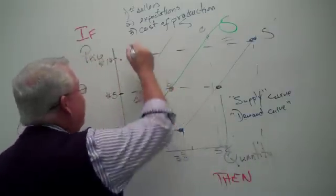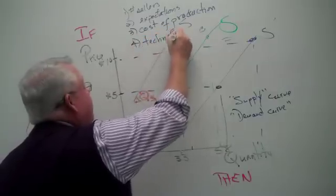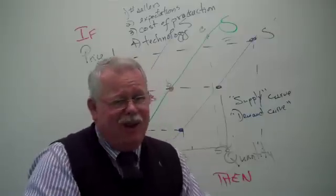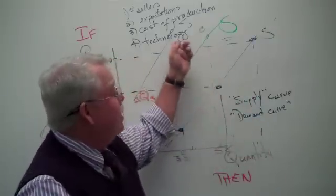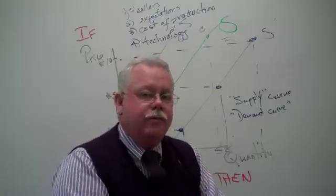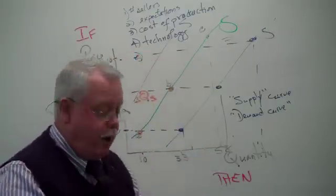And very closely allied to that, we use technology as another force that can increase supply. And to me, it's easy to think about it. Technology typically means decreasing costs of production or becoming more efficient. Now, the fifth one's a little messy up here. What else can shift the supply curve?